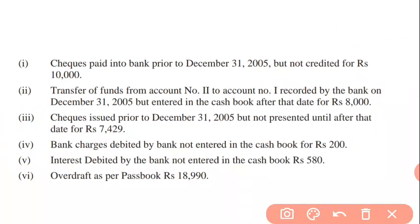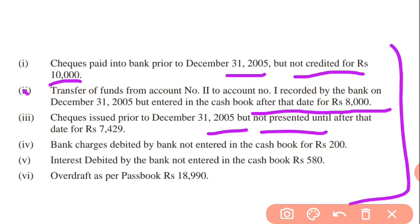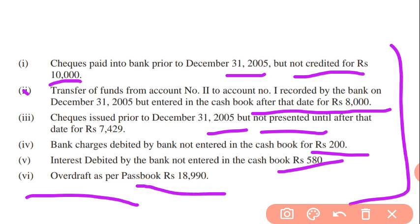What are the adjustments? First: cheque paid into bank prior to 31 December 2005 but not recorded — Rs. 10,000. Note that the opening overdraft balance figure is not given, so silently read the whole question first. Second: transfer of funds from account number two to account number one, recorded by bank on December 2005 but entered into cash book after that date — Rs. 8,000. Third: cheque issued prior to December 2005 but not presented until after that date — Rs. 7,249. Fourth: bank charges debited by bank, not entered into cash book — Rs. 200. Fifth: interest debited by bank, not entered into cash book — Rs. 580. And the last item shows overdraft as per pass book is Rs. 18,990.